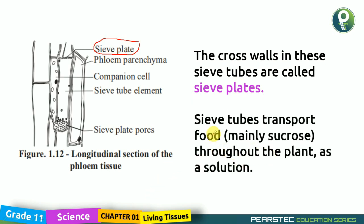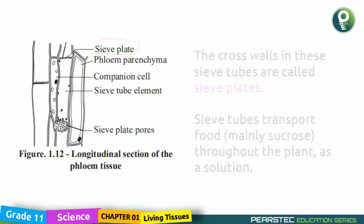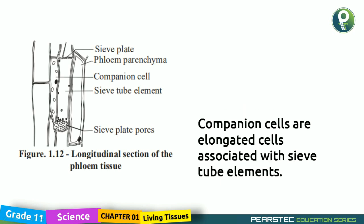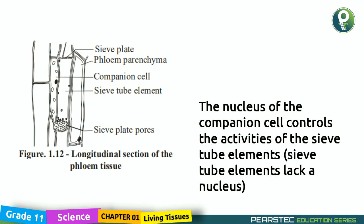Sieve tubes transport food - mainly sucrose - throughout the plant as a solution. So please remember: it is transported as a solution. Companion cells are elongated cells associated with sieve tube elements. The nucleus of the companion cells controls the activities of the sieve tube elements. Sieve tube elements lack a nucleus, but the companion cells have a nucleus that controls the sieve tube element activities.